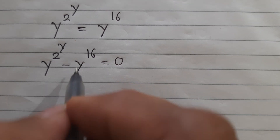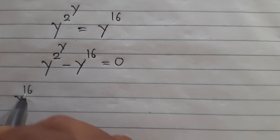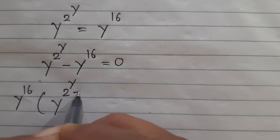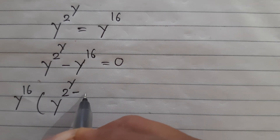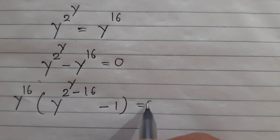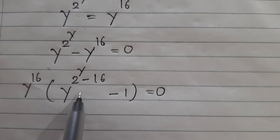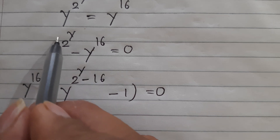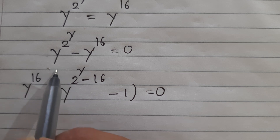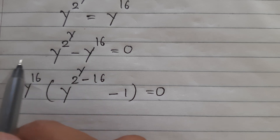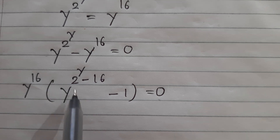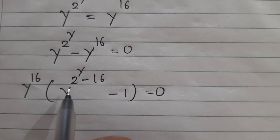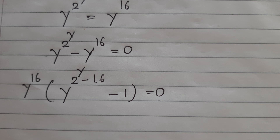At this step, if we take y to the 16 as a common factor, we get y to the 16 times (2 to the power of y minus 16 minus 1) equals 0. To factor out y to the 16, we divide it in and the exponents subtract, so the base terms go into subtraction. We apply that formula here.